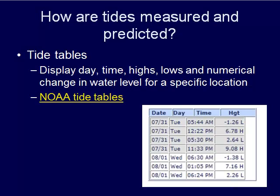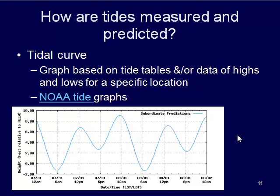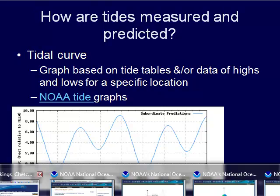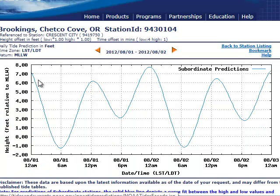The next thing we can look at are tide curves — tide graphs that give us these curves. This curve is a predicted curve based on tide tables, past data, and our knowledge of the area: what the coastline basin is like, what the latitude is, and what the moon cycles are like at that specific location. When we look at that tide chart we can see the highs and the lows.